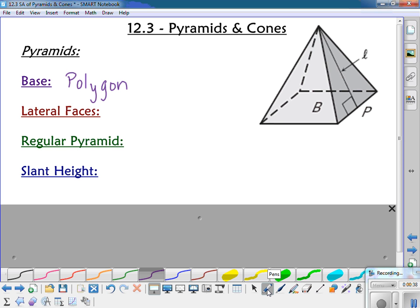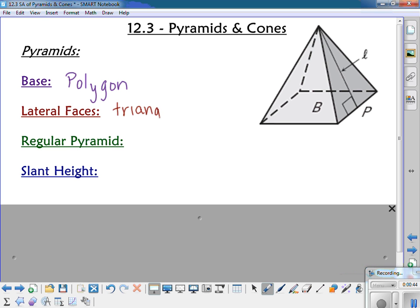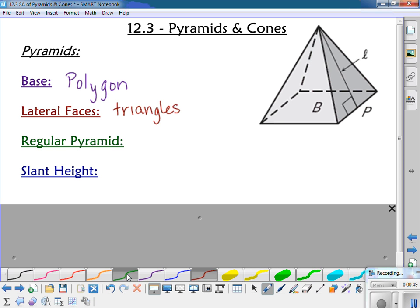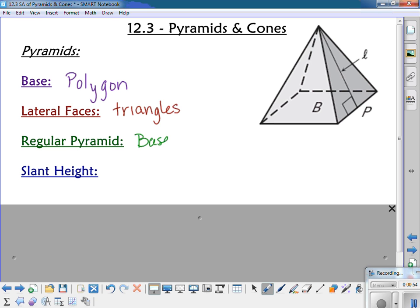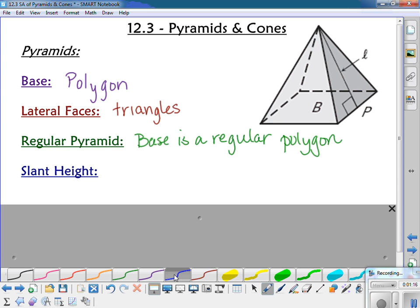The lateral faces with a pyramid are all triangles. And if it's a regular pyramid, what that means is that the base is a regular polygon. And regular means it's equilateral and equiangular and convex.